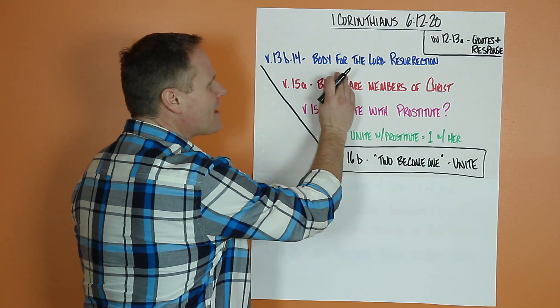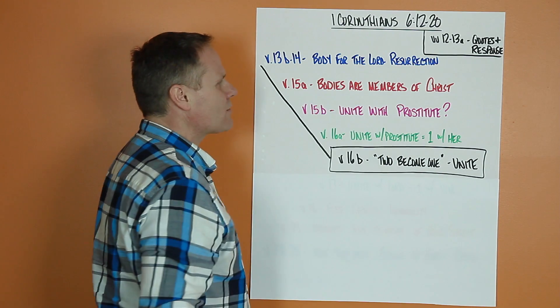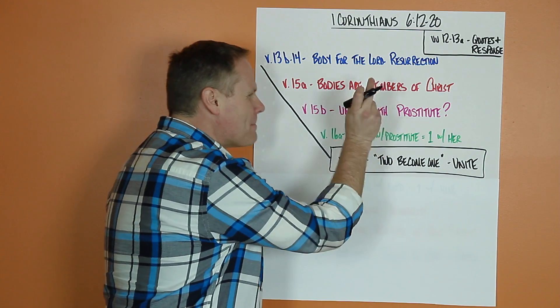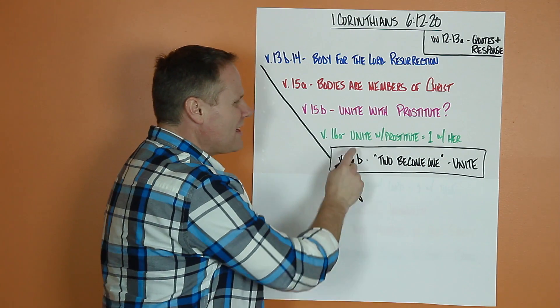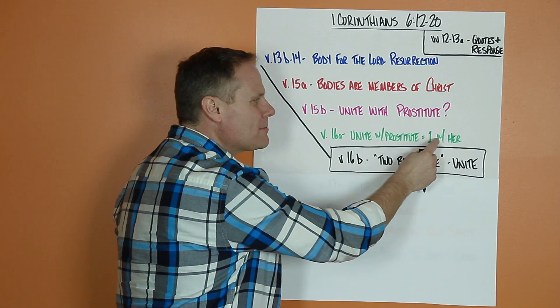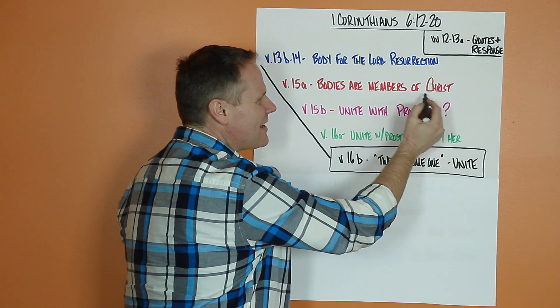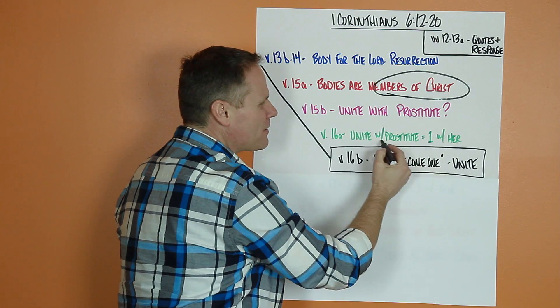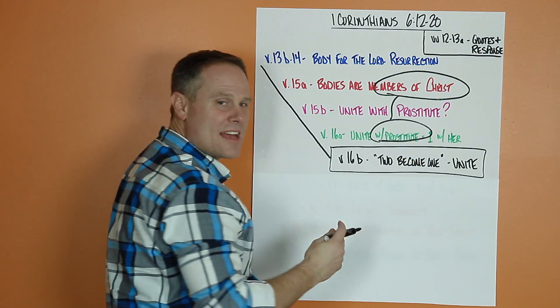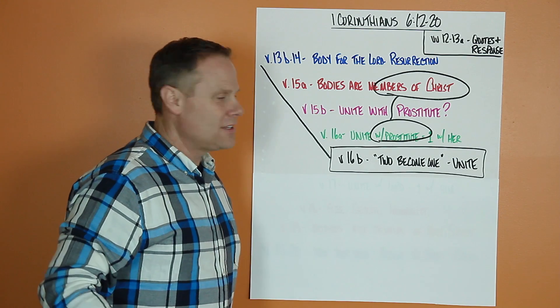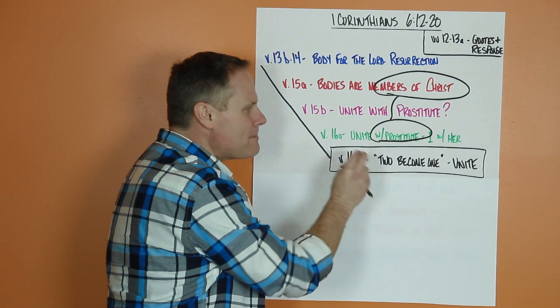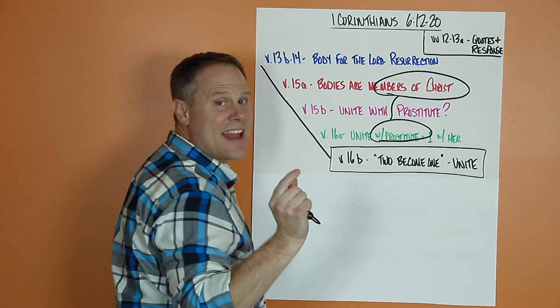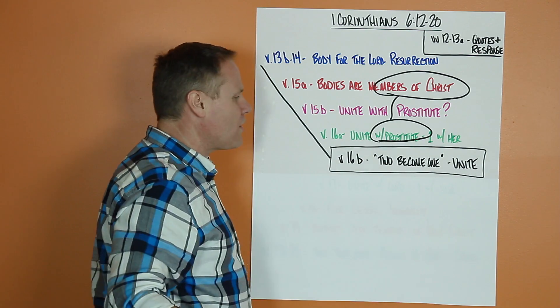So first half: the body's for the Lord, the Lord for the body, emphasizing the resurrection. Your body is actually a member of Christ. Are you going to unite that member of Christ with a prostitute? Because when you unite with a prostitute, you actually become one with her. And he's insinuating that as a member of Christ, becoming one with a prostitute, that's just unfathomable. And why would he say that? Because of an Old Testament quote that when two people have sex, there's a unity that happens that doesn't just go away.